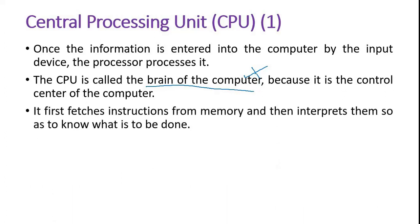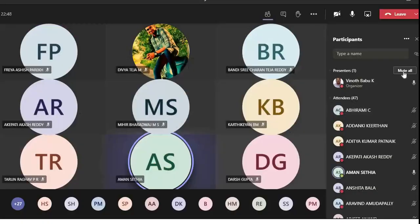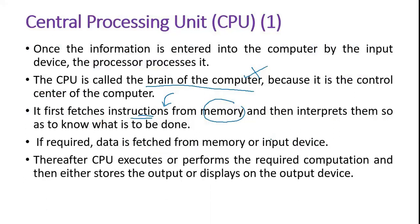In the memory you have the instructions. Say I want to find out the factorial of some number — the corresponding instructions, whatever you are programming, those instructions are stored in the memory, and even the data is also stored in the memory. The CPU fetches the instructions from the memory and then interprets them. Based on the instructions, it will act on the data — whether to add, subtract, or multiply the data.